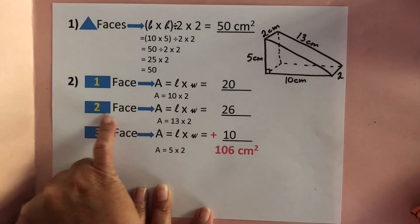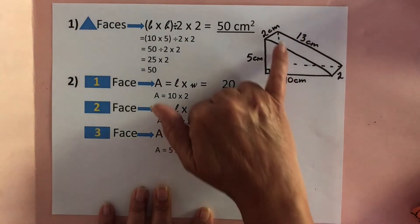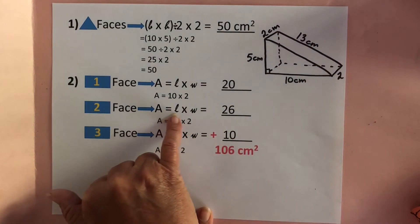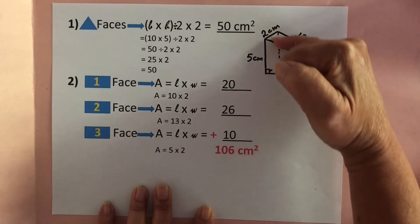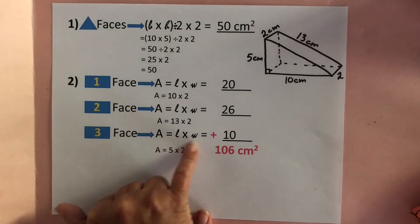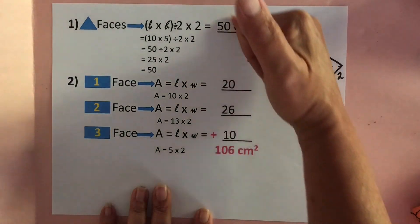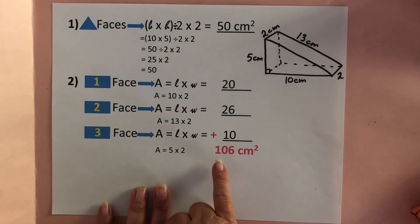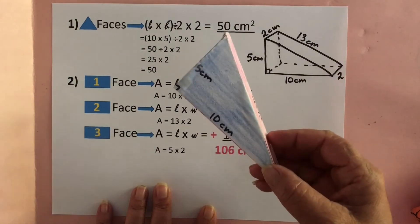Now we solve for the three rectangular faces. The bottom face is 10 centimeters by 2 centimeters, so 10 times 2 equals 20. The ramp side — the one on a diagonal — is 13 centimeters by 2 centimeters, so 13 times 2 equals 26. The shorter back side on the far left is 5 centimeters by 2 centimeters, so 5 times 2 equals 10. Adding all five faces: 50 plus 20 plus 26 plus 10 equals 106 square centimeters. This triangular prism has a surface area of 106 square centimeters.